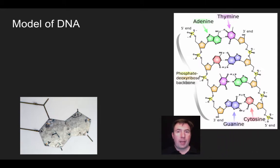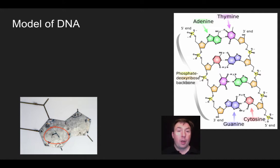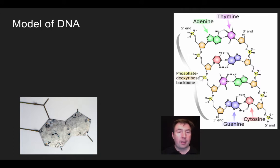Let's start with the model of DNA. I'm going to talk a little bit about how the model was developed. In the lower left-hand corner, we can see an aluminum cutout that has an A on it. This aluminum cutout is what was used when Watson and Crick built their first three-dimensional model of a double helix. They went to a metal shop and had aluminum models cut of the various parts of DNA.